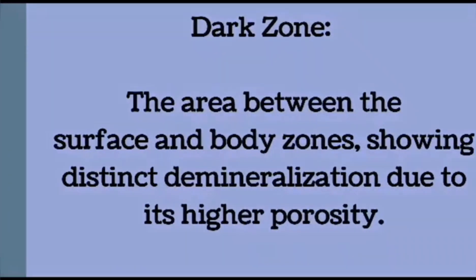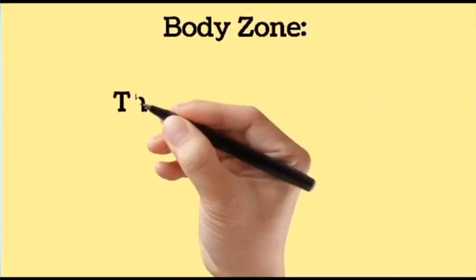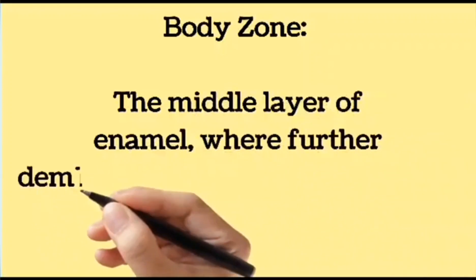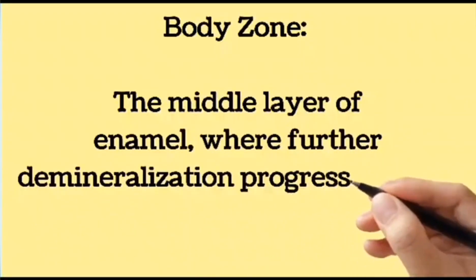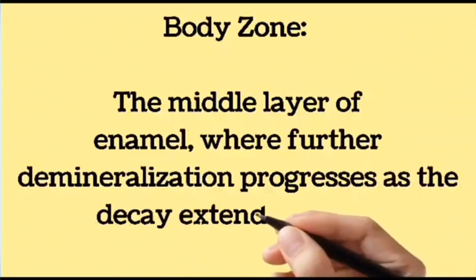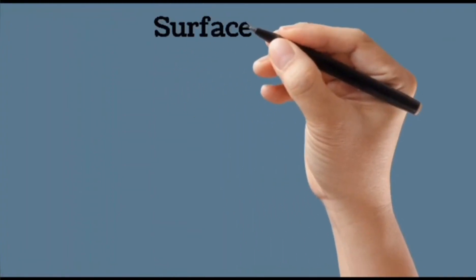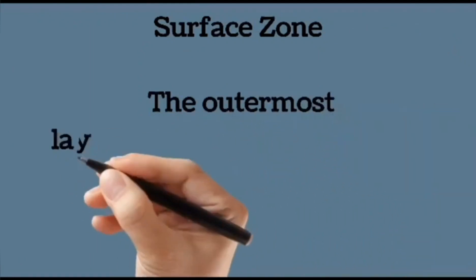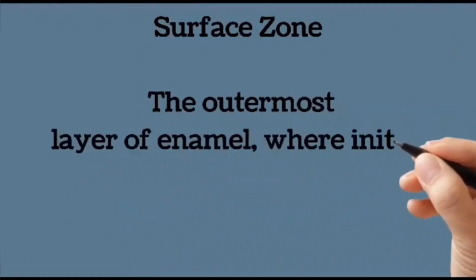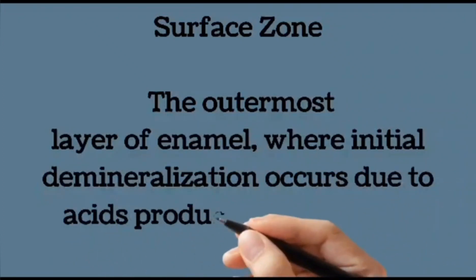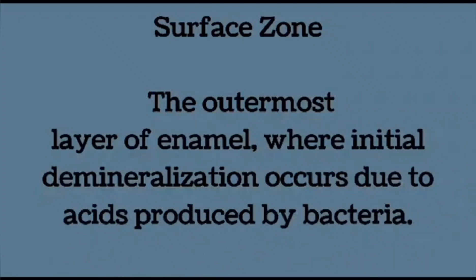The third zone is the body zone — the middle layer of the enamel where further demineralization progresses as the decay extends deeper. The last zone is the surface zone, which is the outermost layer of the enamel where initial demineralization occurs due to acid produced by bacteria.